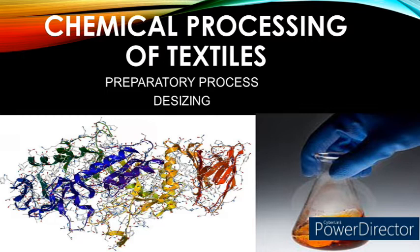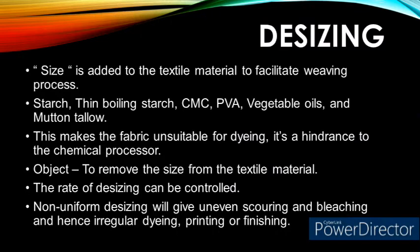Desizing is one of the most important preparatory processes, followed as a primary and foremost wet processing process for a woven fabric. Since no sizing process is required for a knit fabric, desizing is not at all followed in knit wet processing sequences. In general, gray fabric contains natural impurities as well as size.